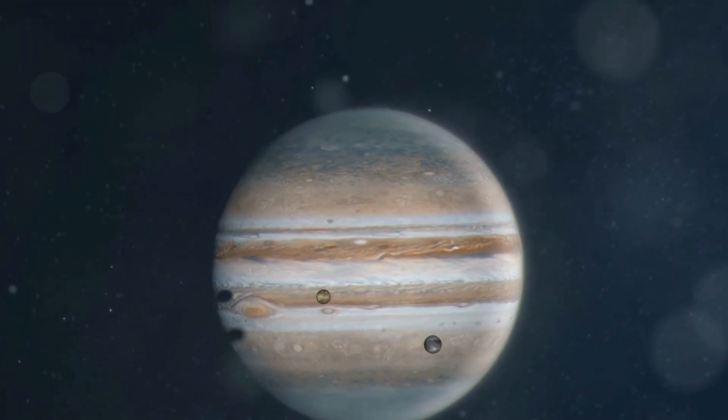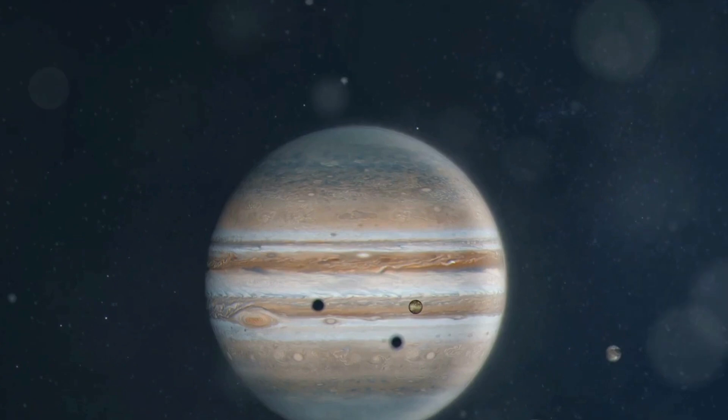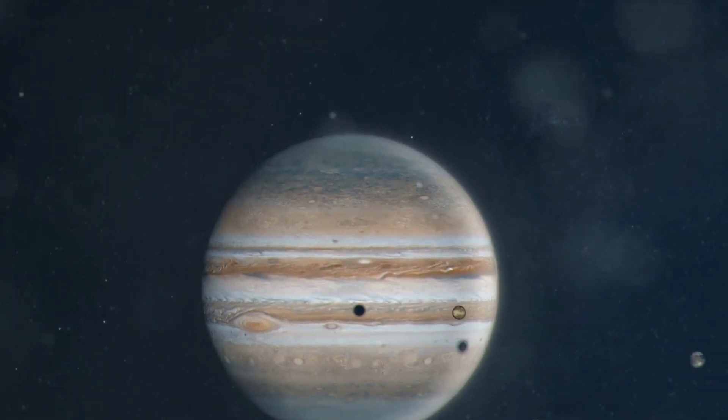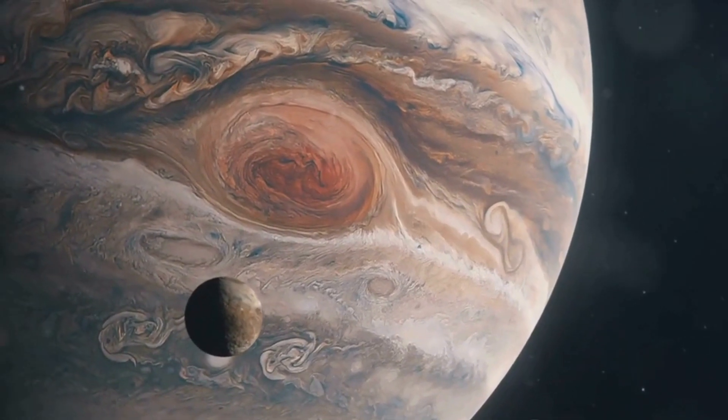Enter the triple eclipse, a celestial spectacle that unfolds when three of Jupiter's largest moons, Io, Europa, and Ganymede, align perfectly. When this happens, these moons cast their shadows on the gas giant simultaneously.